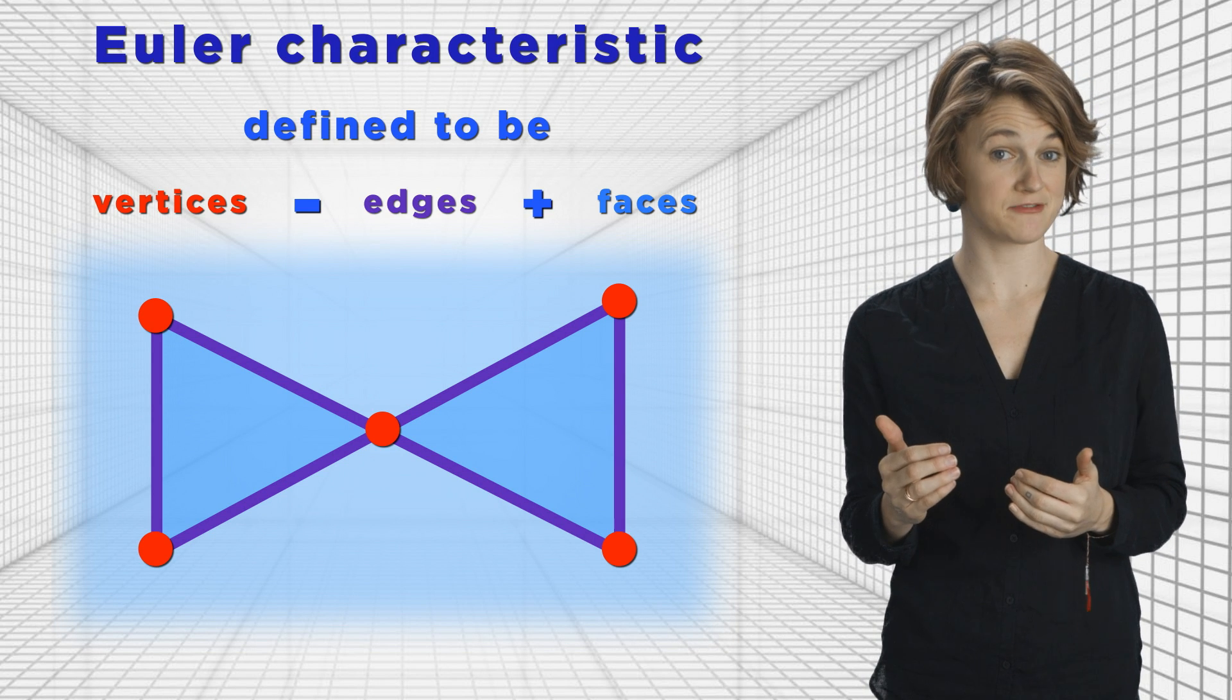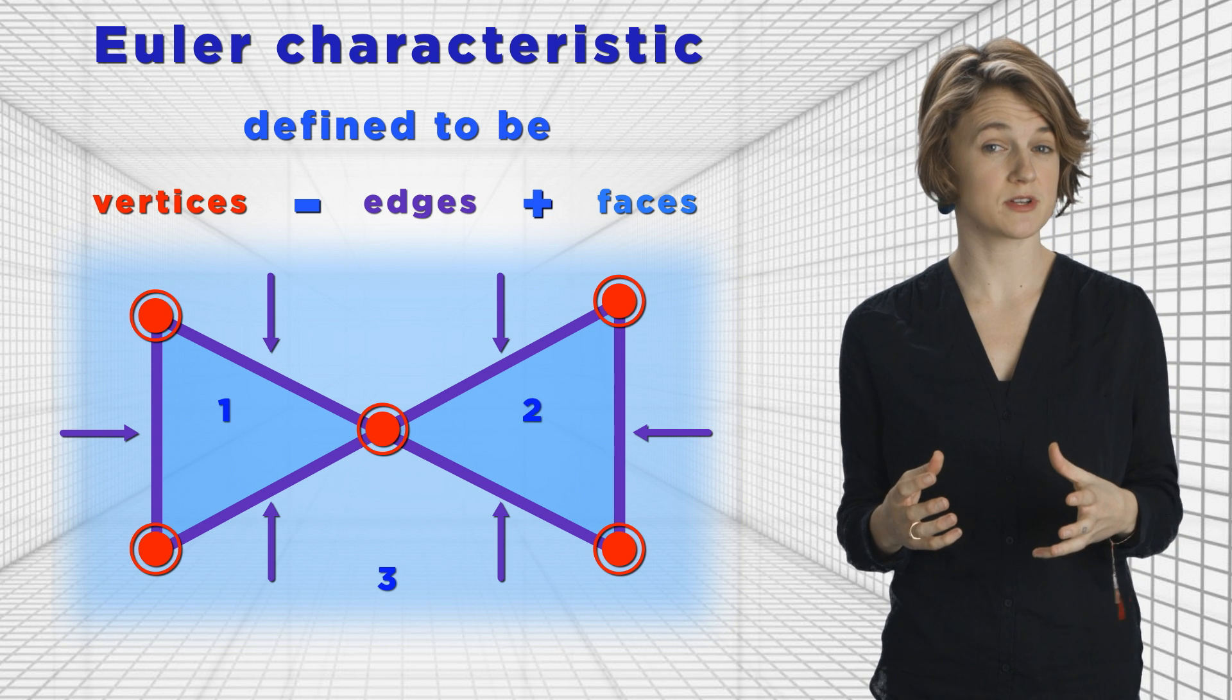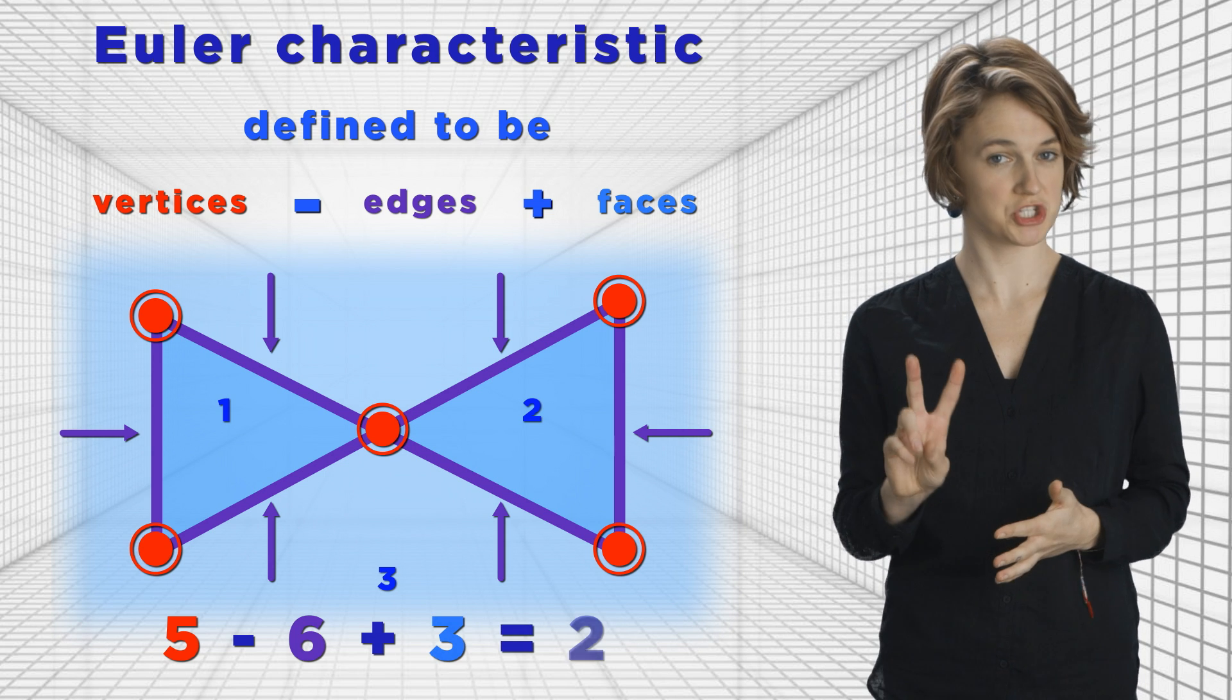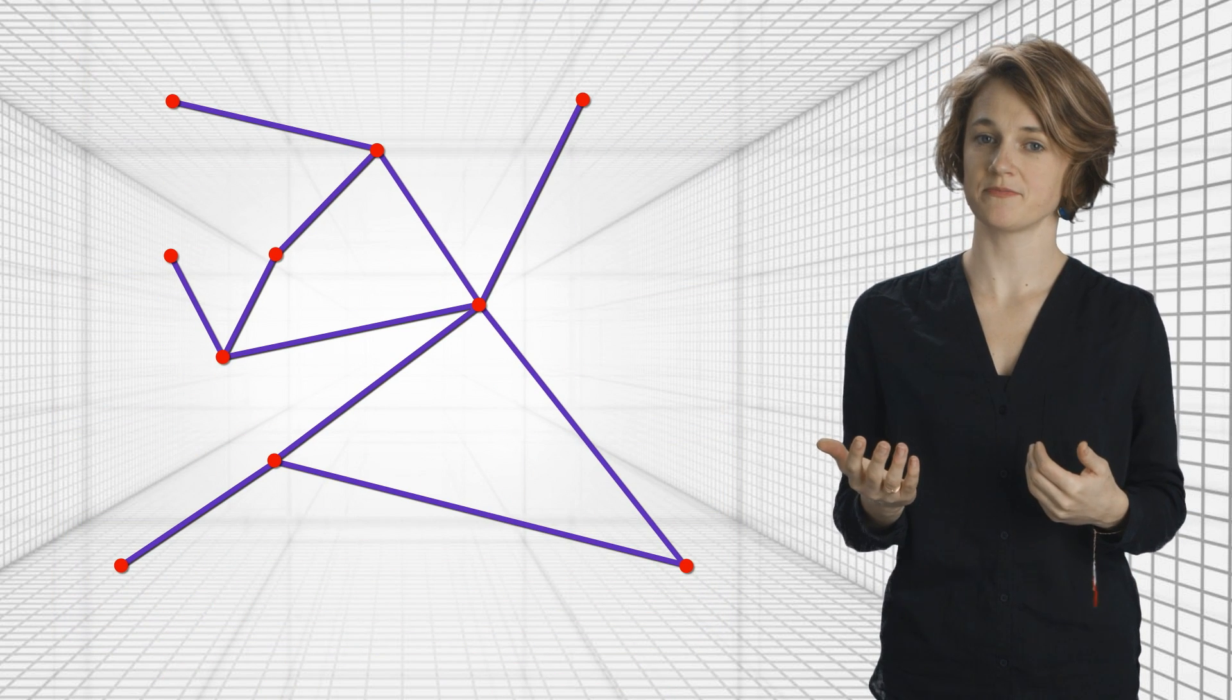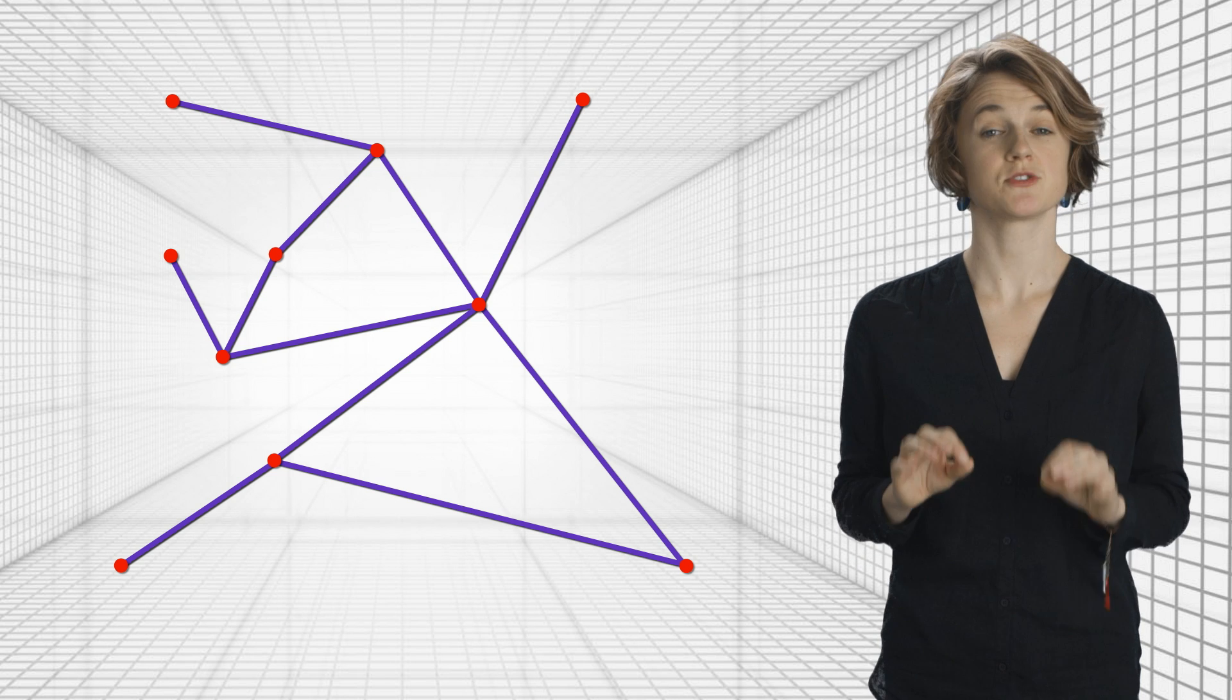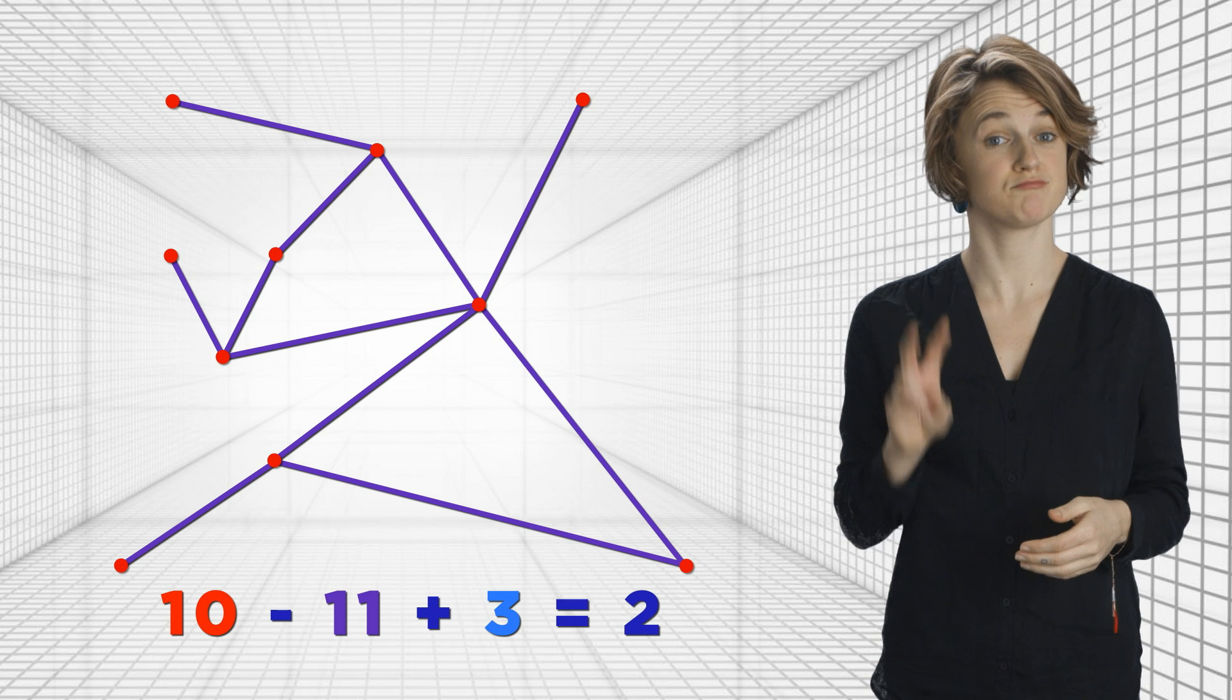So this graph has five vertices, six edges, and three faces. That makes its Euler characteristic five minus six plus three, which is two. What about this graph? It has 10 vertices, 11 edges, and three faces. So the Euler characteristic is 10 minus 11 plus three, which is, again, two.